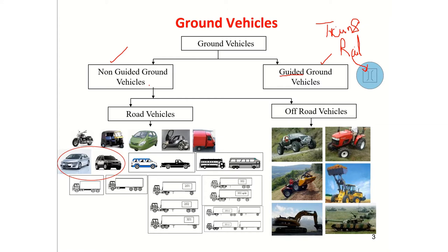Non-guided ground vehicles are the motor vehicles. On the road, it is up to the driver to steer the vehicle and make it follow the required path. The road or track does not guide the vehicle by itself — the driver is responsible for steering. Such vehicles we call non-guided ground vehicles.